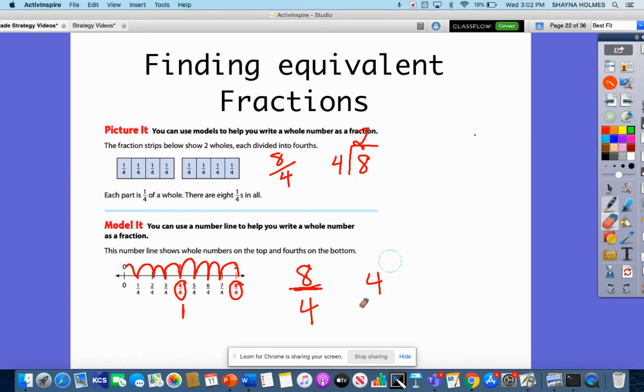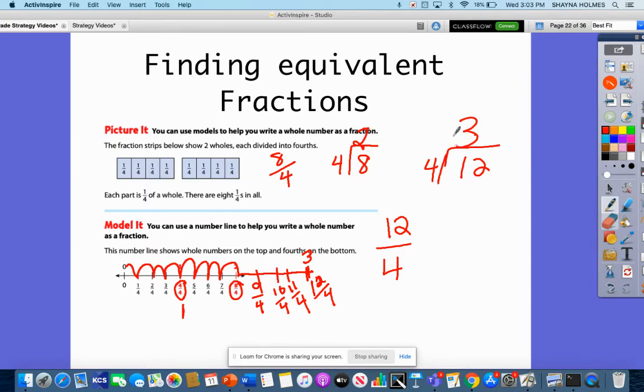Let's continue on this number line so you can see a pattern. Let's say that this was going to be 3 holes, so we had a hole here and a hole here. So let's divide this into 4. So I would have 9 fourths, 10 fourths, 11 fourths, and 12 fourths. Well, 12 fourths is the same as 12 divided by 4, which is 3. So hopefully you see that pattern there.